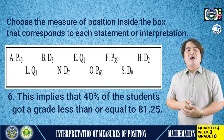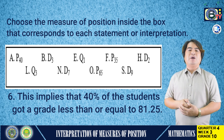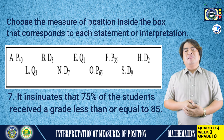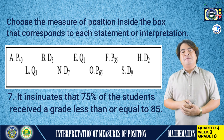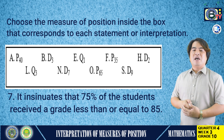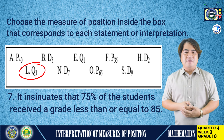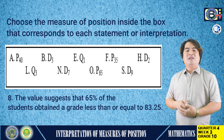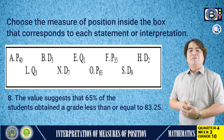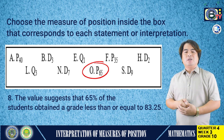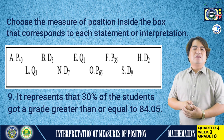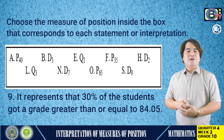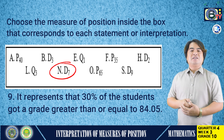Number 6: this implies that 40% of students got a grade less than or equal to 81.25. The answer is letter A, which is percentile 40. Number 7: it insinuates that 75% of students received a grade less than or equal to 85. The answer is letter L, which is quartile 3. Number 8: the value suggests that 65% of students obtained a grade less than or equal to 83.25. The answer is letter O, which is percentile 65. Number 9: it represents that 30% of students got a grade greater than or equal to 84.05. The answer is letter N, which is decile 7.